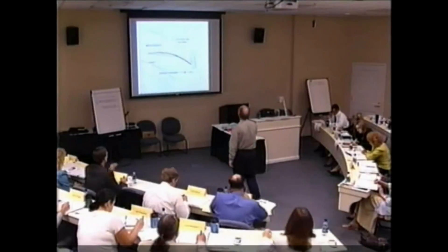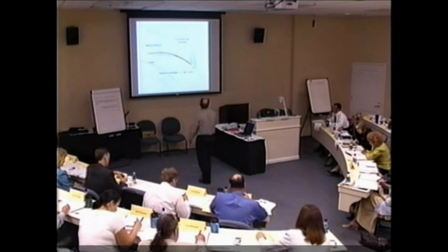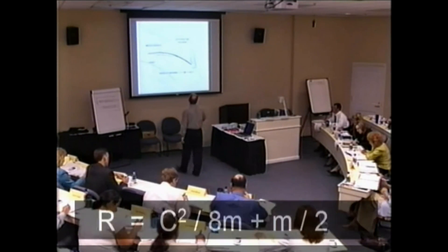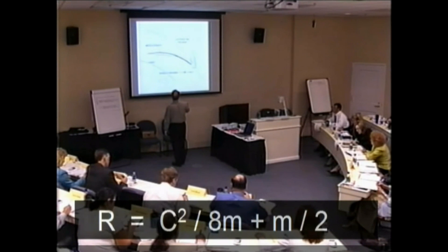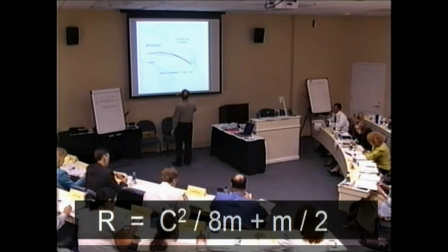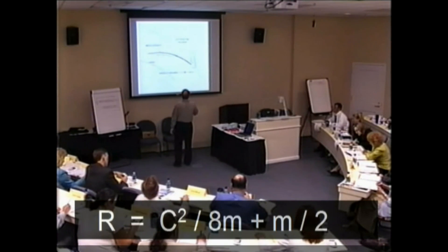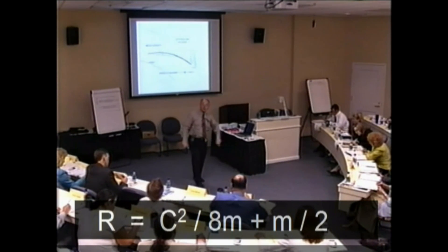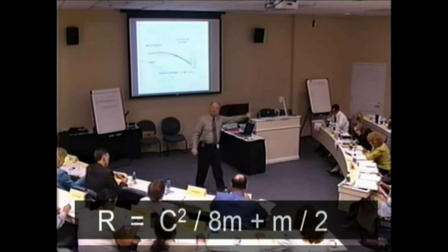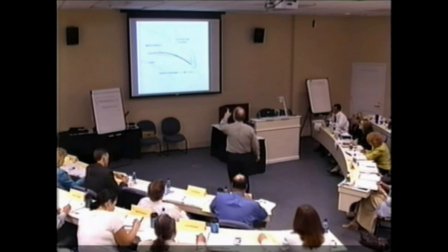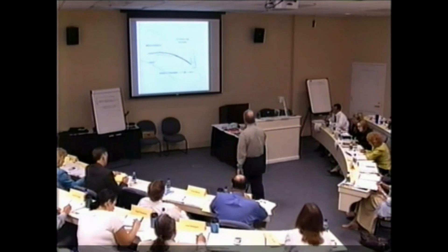Here's the equation — I'll have this written again when we need it. It involves taking the chord and squaring it, then dividing by eight times the middle ordinate, then adding half the middle ordinate. That gives you the radius of the circle that this mark represents.